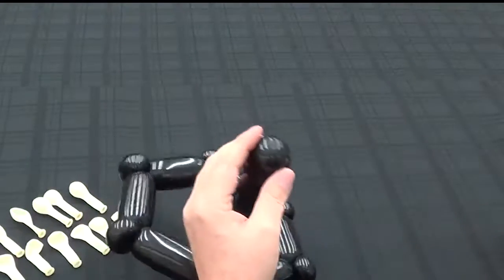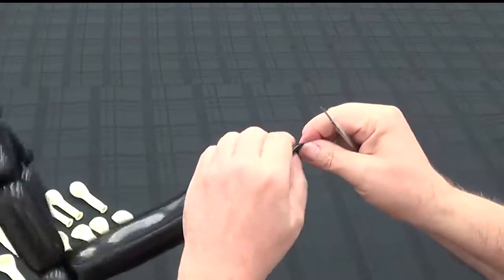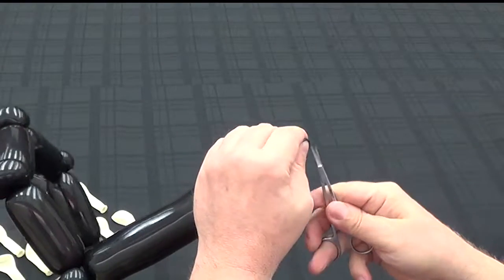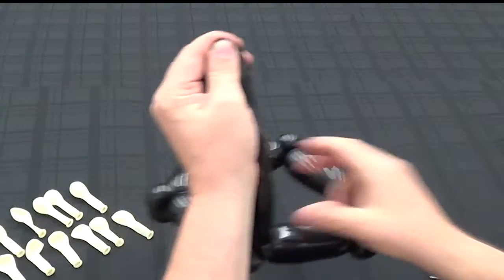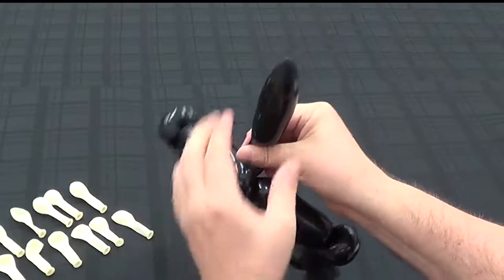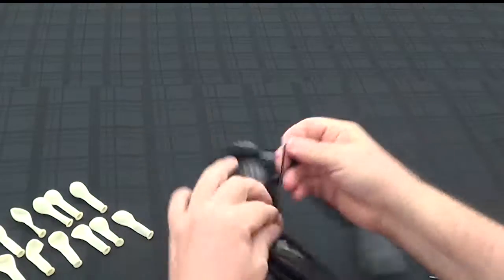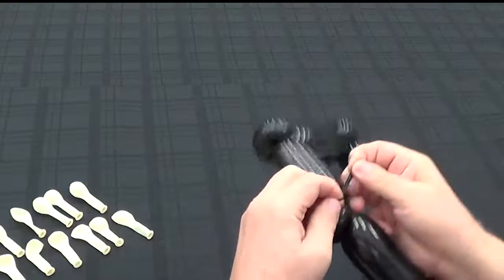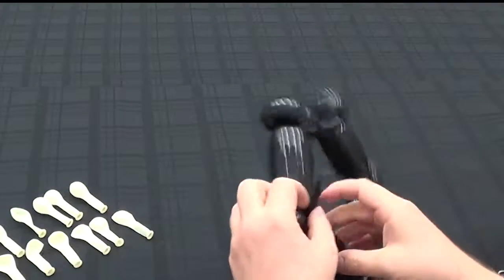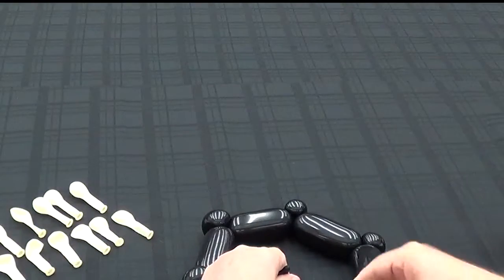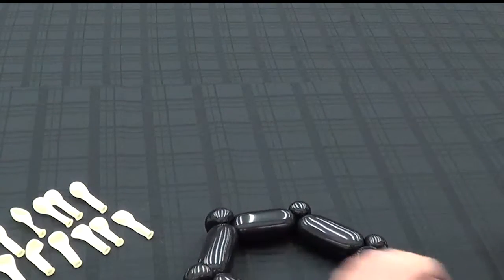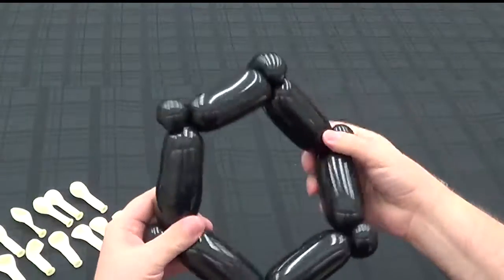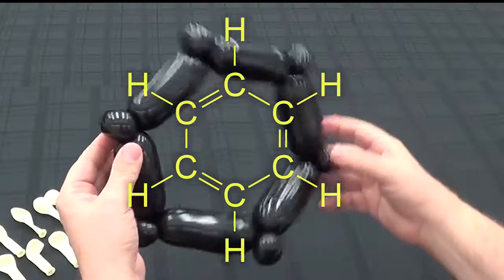The extra balloon, we're going to carefully deflate. We just pinch the end, poke a small hole, let the air out and we'll tie that off and cut off the excess. So now, a beautiful symmetric six-membered ring.